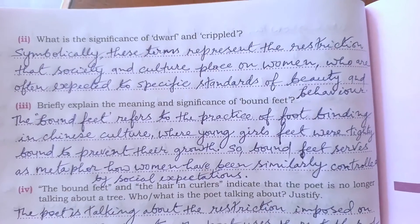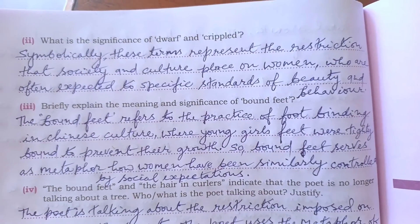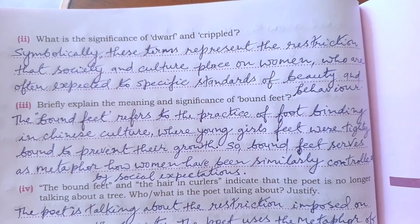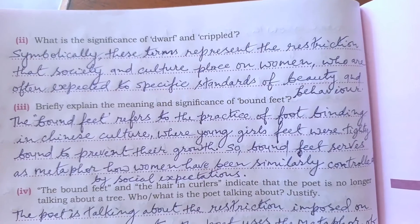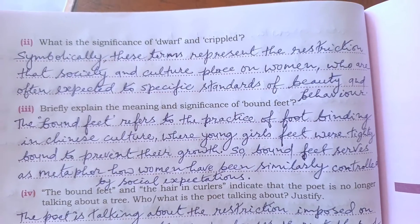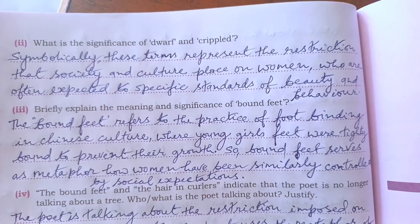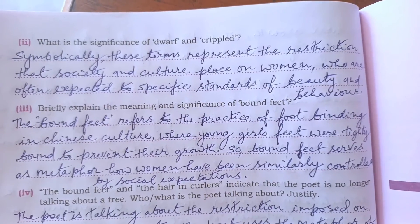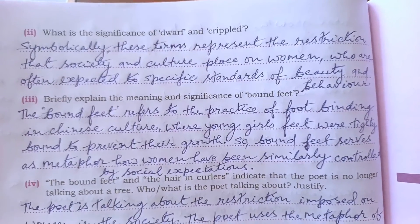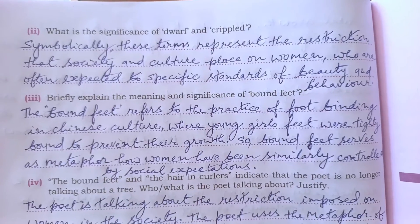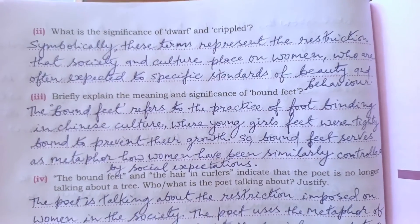Question two: what is the significance of 'dwarf' and 'crippled'? The answer is: symbolically, these terms represent the restriction that society and culture places on women, who are often expected to conform to specific standards of beauty and behavior.